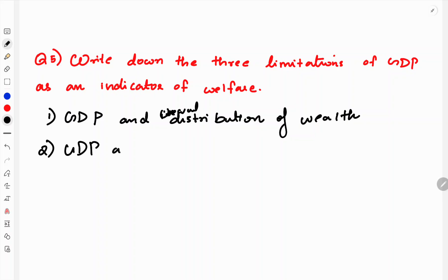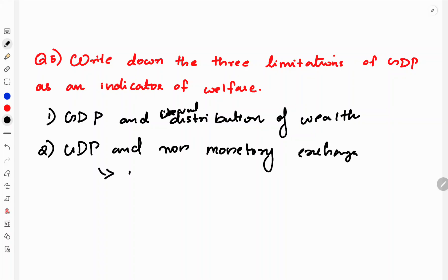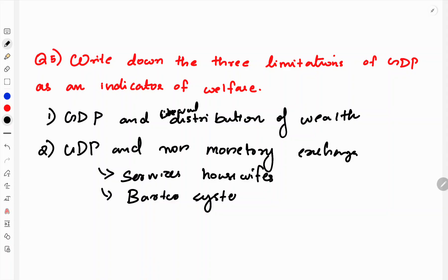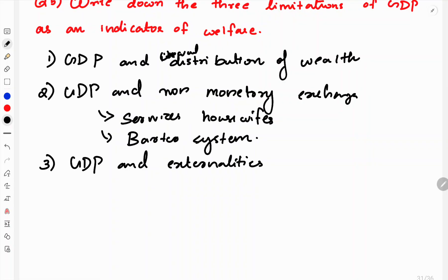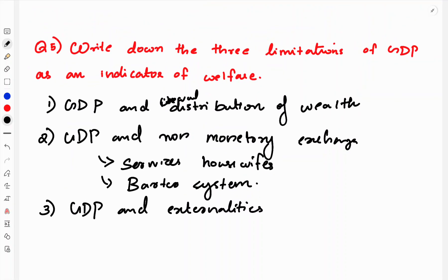Second limitation is non-monetary exchanges. GDP does not count services of housewives, the barter system, or commodity exchange — these are not measured in GDP. Third limitation is externalities — both positive and negative externalities from government or industrial activity cannot be properly calculated by GDP. That is why GDP may not be a good indicator of welfare.